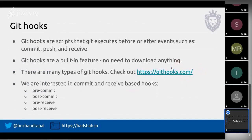We found something called git hooks — simple scripts that git itself executes before or after events like a git commit, git push, or git receive. There are multiple types of git hooks, and they are a built-in feature of git, so developers don't need to download any new software. We are interested in commit- and receive-based hooks: pre-commit runs before a commit, post-commit runs after, then there are pre-receive and post-receive hooks.